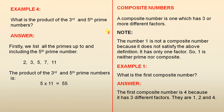Example 4: What is the product of the third and fifth prime numbers? Firstly, we list all the prime numbers up to and including the fifth prime number. So those are the first five prime numbers. We want the product of the third and the fifth — five times eleven is fifty-five.